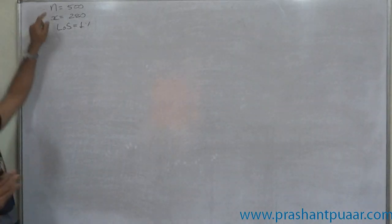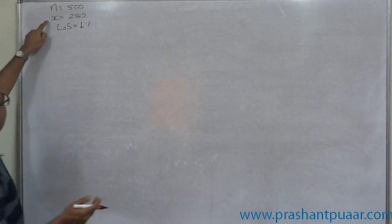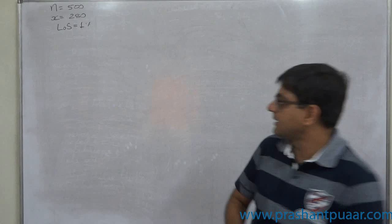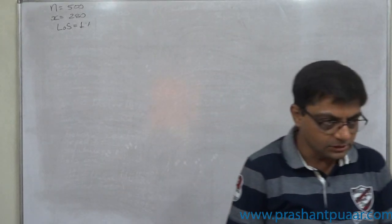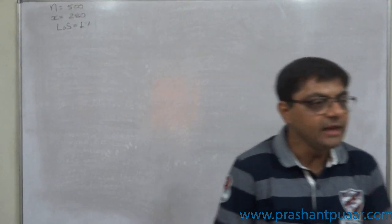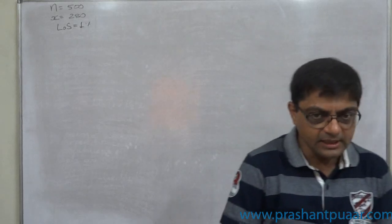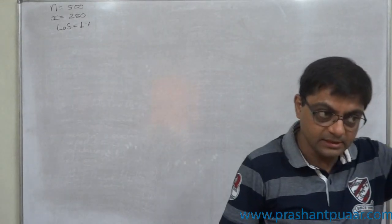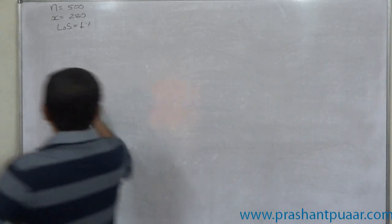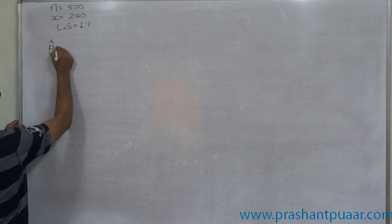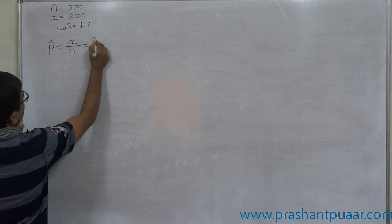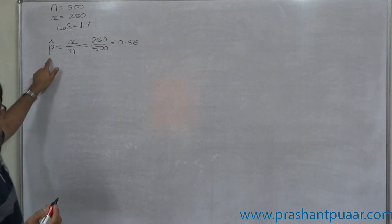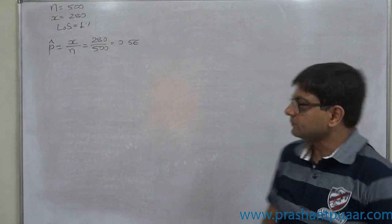First of all, n as usual is the size of the sample. x is, in simple language, the favorable number of cases. Technically, x means the number of observations or number of members of the sample having the characteristic of interest. Here, a person being a tea drinker — 280 have that characteristic. x is used to calculate the sample proportion, denoted as p-cap (p with a cap).